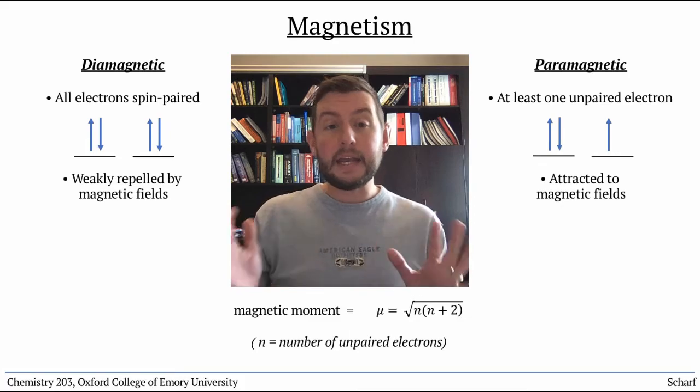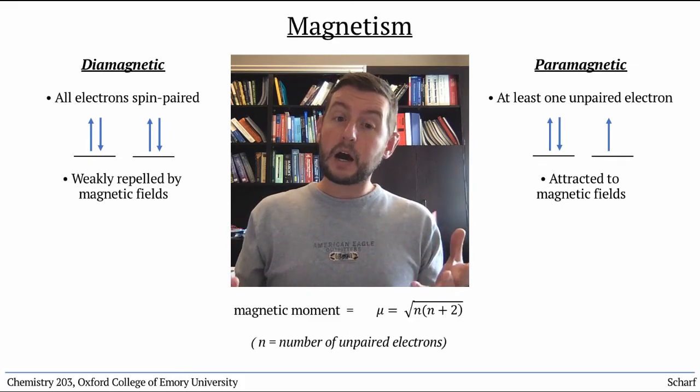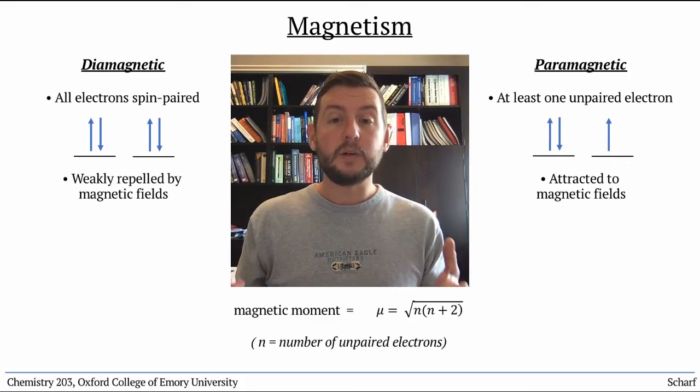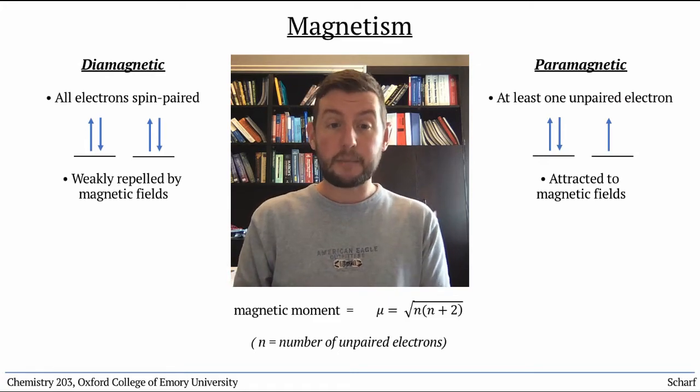Obviously any transition metal complex with an odd number of d electrons will necessarily be paramagnetic.